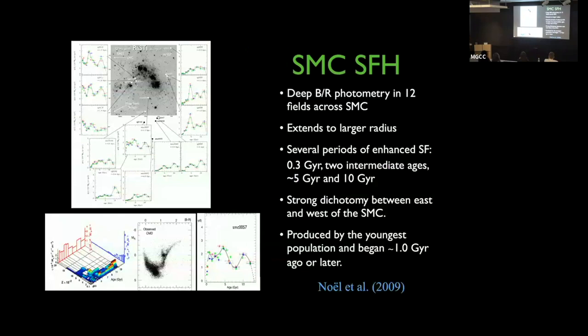Noelia Noel and Carme Gallart performed deep BVR photometry in 12 fields across the SMC, extending to larger radius than the Harris-Zaritsky data. They found several periods of enhanced star formation at about 0.3, different intermediate ages, 5, and 10 gigayears ago, and also found a stark bimodality between the eastern and western SMC, mostly driven by the 1-gigayear age group.